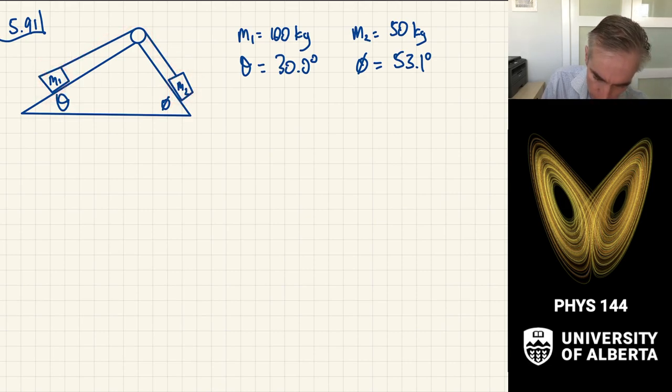In your book, these are given as M1 is 100 and M2 is 50 kilograms. And then I have two angles that I'll call theta and phi, which have angles of 30 and 53.1 in your book, respectively. And the question is, what is the acceleration of each block in the system, given this coupled relationship?